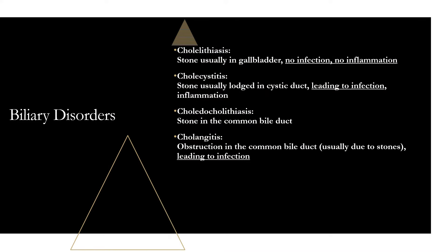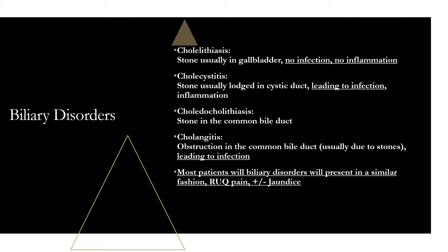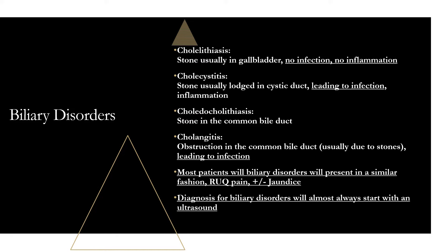There are a few things you'll see repeated as we go along because a lot of these share common diagnosis and treatment. Most patients with biliary disorders will have right upper quadrant pain because that's where the gallbladder and biliary tree are. They may or may not have jaundice, depending on where the stone and obstruction are. For diagnosis, you're almost always going to start with an ultrasound — it's cheap, easy, and works well. And treatment in most cases will ultimately be a cholecystectomy.